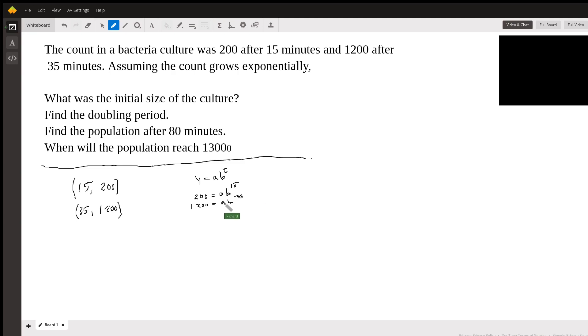So we have a nice little system of equations. We have two equations with two unknowns, two variables here. I'm going to divide the top by the bottom. So I'm going to get 1,200 divided by 200, which is obviously 6. And that's equal to B to the 35 minus 15 power, which would be B to the... the A's cancel.